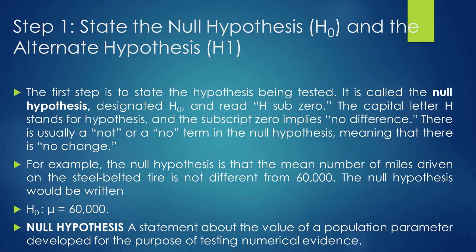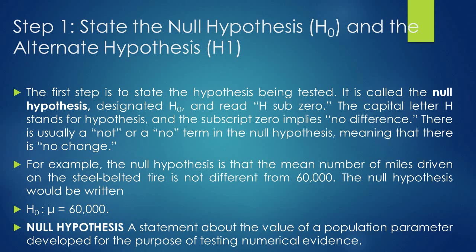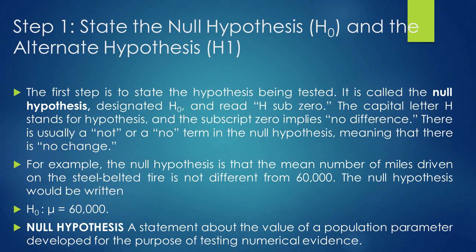There is usually a 'not' or 'no' term in the null hypothesis, meaning there is no change. For example, the null hypothesis that the mean number of miles driven on a steel-belted tire is not different from 60,000 means mu equals 60,000. The null hypothesis is written as H-naught: mu equals 60,000. Always in the null hypothesis we use an equality sign. The null hypothesis is a statement about the value of a population parameter developed for the purpose of testing numerical evidence.